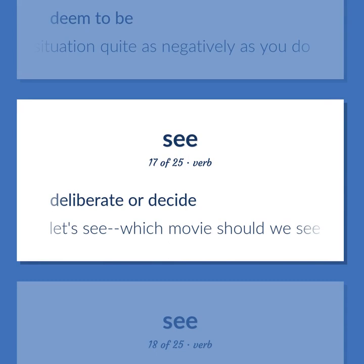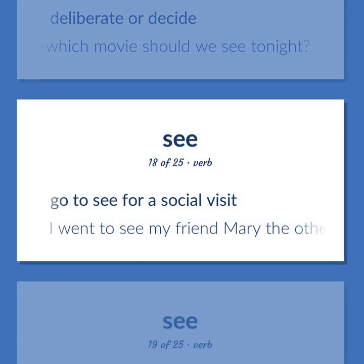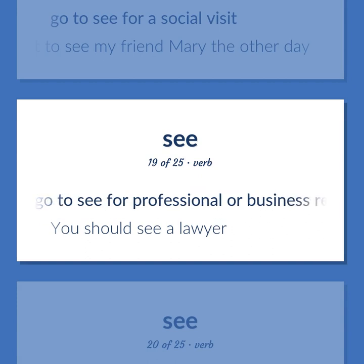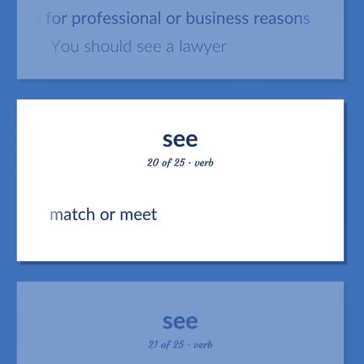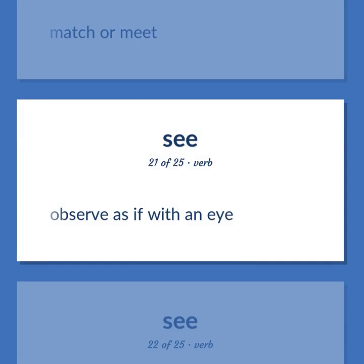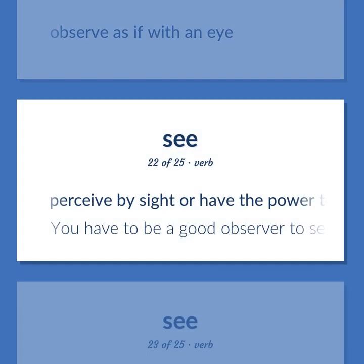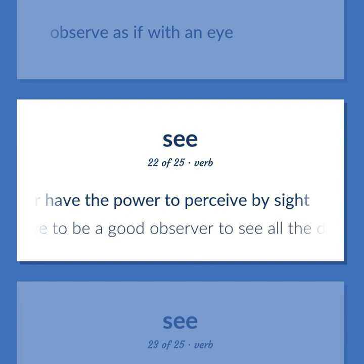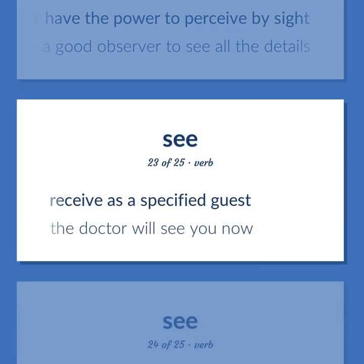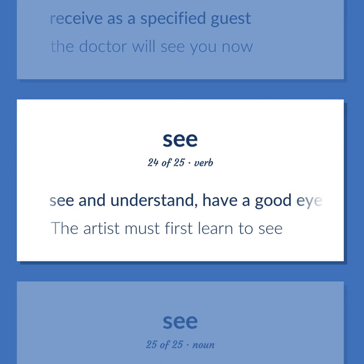Deliberate or decide — let's see, which movie should we see tonight? Go to see someone for a social visit — I went to see my friend Mary the other day. Go to see someone for professional or business reasons — you should see a lawyer. Match or meet. Observe as if with an eye. Perceive by sight or have the power to perceive by sight — you have to be a good observer to see all the details. Receive as a specified guest — the doctor will see you now. See and understand, have a good eye — the artist must first learn to see.